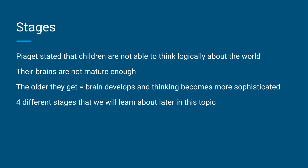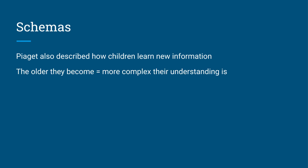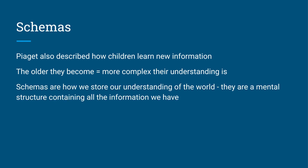There are four different stages of learning that Piaget talked about, and we're going to learn them in another video later in this topic. He also talked about schemas. We've previously learned about schemas in the memory unit, and Piaget described how children learn new information - the older they become, the more complex their understanding is. Now schemas are how we store our understanding of the world. They're a mental structure containing all of the different information we have.